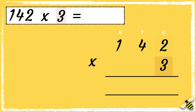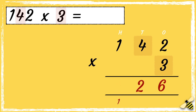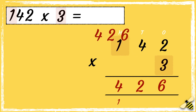First we're going to multiply 3 by 2. 3 times 2 is 6. Then we need to multiply 3 by four tens. 3 times 4 is 12. We carry the one below in the hundreds column as it represents 100. Next we need to multiply 3 by 100. So 3 times 1 is 3. Remember we need to add the 100 below, so 3 add 1 more is 4. So the answer is 426.